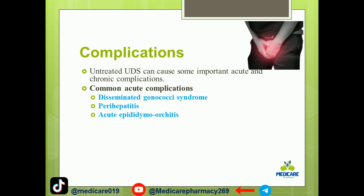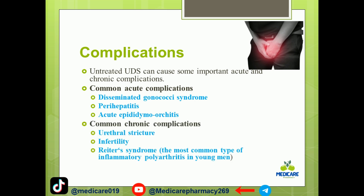Common chronic complications include urethral stricture, infertility, and reactive arthritis — the most common type of inflammatory polyarthritis in young men.